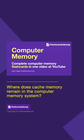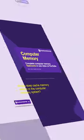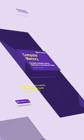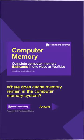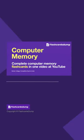Where does cache memory remain in the computer memory system? This question is from a computer memory video on YouTube, which contains complete computer memory flashcards. Cache memory remains between the primary memory and the CPU.